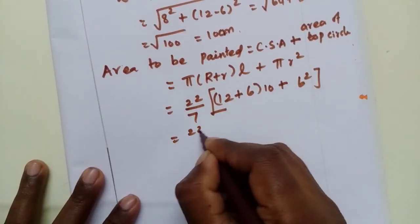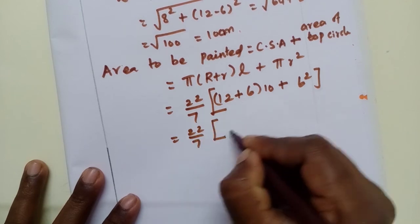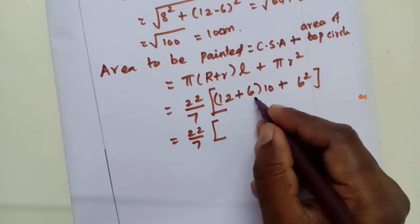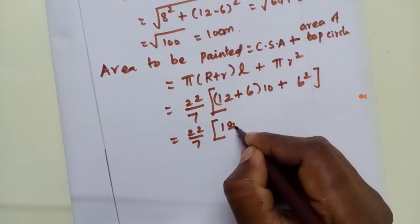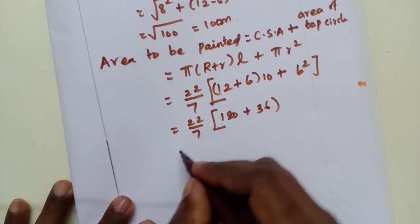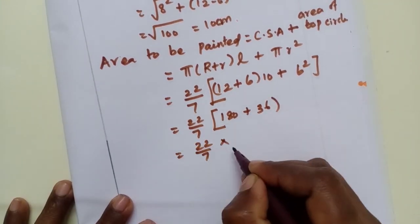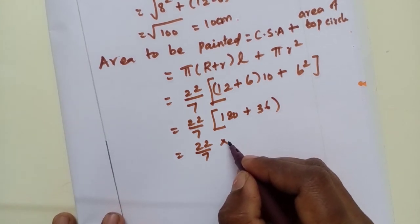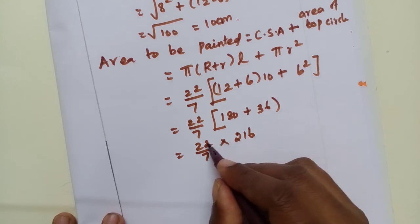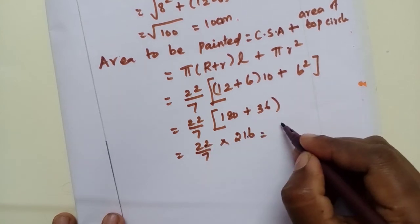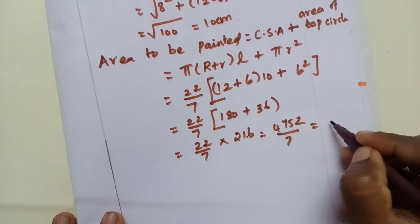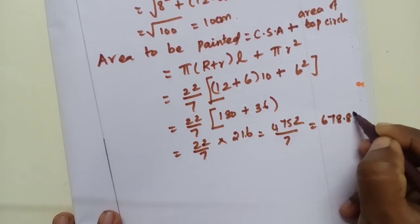So 22 by 7 into 6, 18, 18 plus 10, 180, 180 plus 36. 22 by 7 into 216. If we multiply, 4752 divided by 7, we get 678.86.